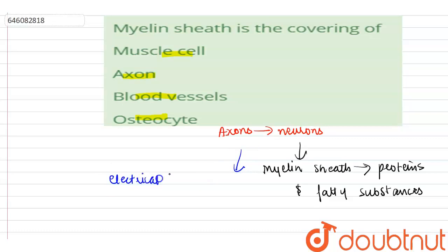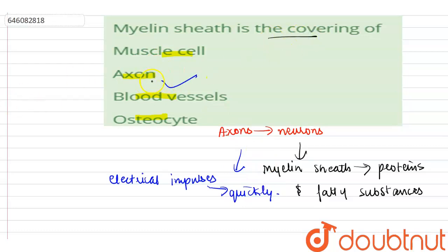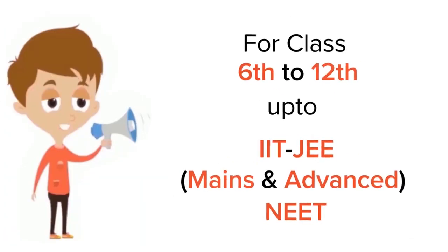The myelin sheath allows electrical impulses to transmit quickly and efficiently along the nerve cells. Therefore, the correct option is axon, as myelin sheath is the covering of axons of neurons — not the covering of muscle cells, blood vessels, or bone cells (osteocytes).